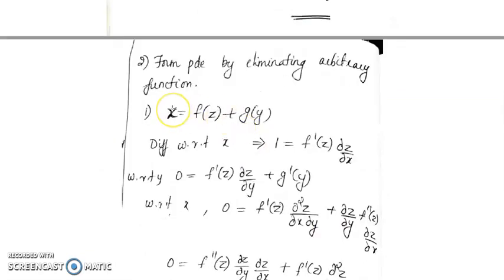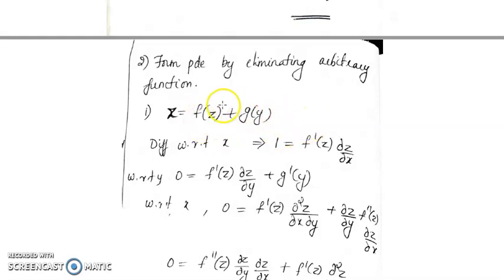Now we will see how to form a PDE by eliminating an arbitrary function. The first question is x = f(z) + g(y), where f and g are arbitrary functions. We find the first order derivatives first. Differentiating with respect to x gives 1 = f'(z)·(∂z/∂x). The second term's derivative is 0.